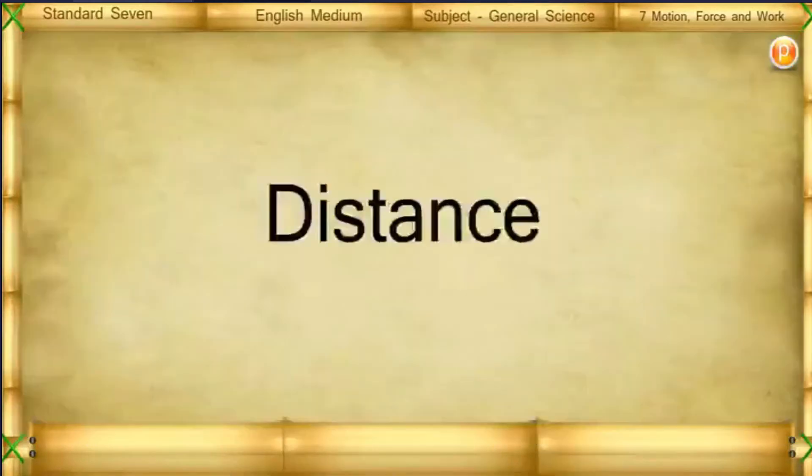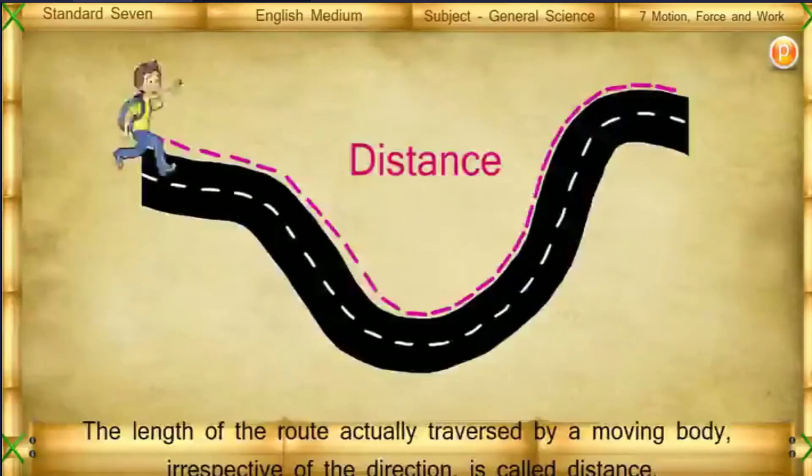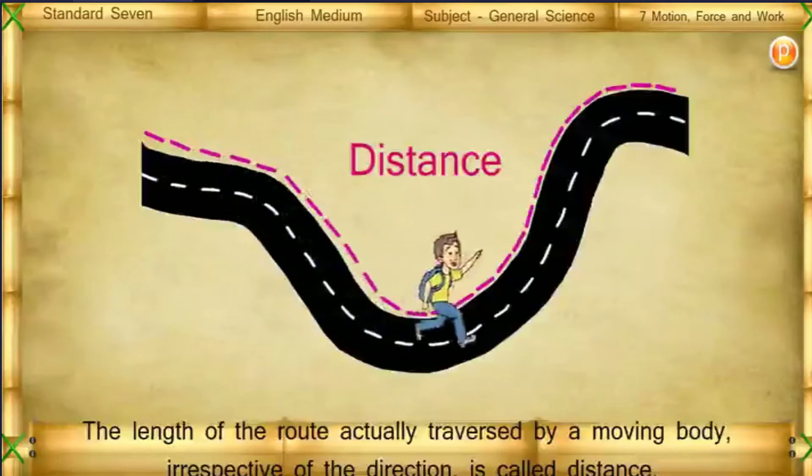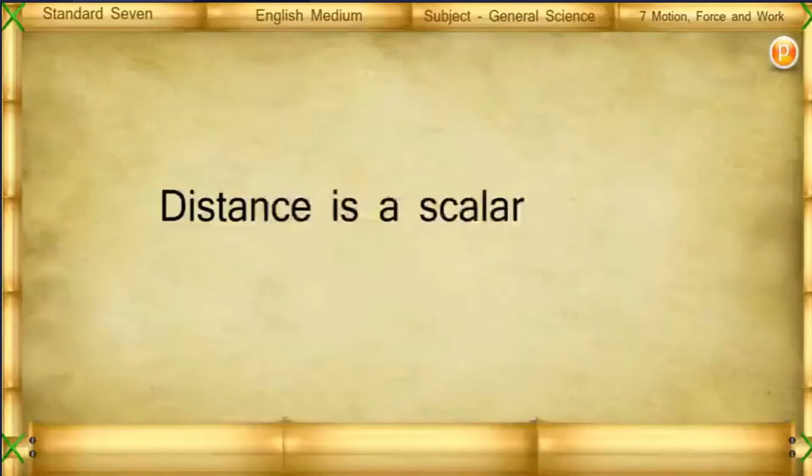Distance: The length of route actually traversed by the moving car, irrespective of the direction, is called distance. Distance is a scalar quantity.